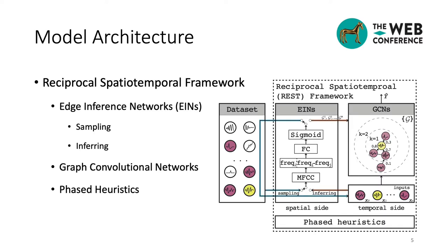To solve the aforementioned problems, we propose a novel approach named Reciprocal Spatiotemporal Framework, or REST for short. As we can see in the diagram, our REST framework consists of spatial side networks, named edge inference networks or EINs for short, and temporal side graph convolutional networks, or GCNs for short.